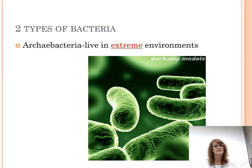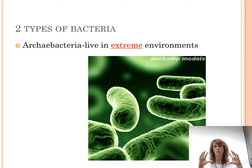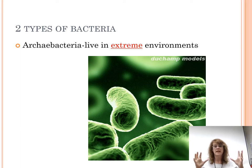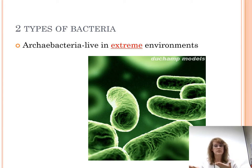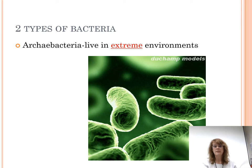These are environments where not a lot of other things live. When the Earth first formed, it was nothing like we know today. The oceans probably didn't have salt water, the atmosphere wasn't like ours — it didn't have oxygen. We had to have plants or autotrophs to produce oxygen. There are some areas on Earth that haven't changed much over time, and that's where we find these types of bacteria.